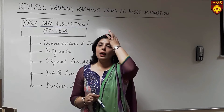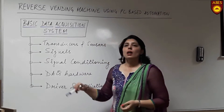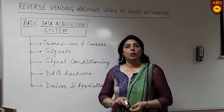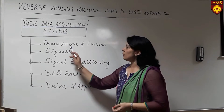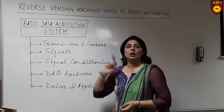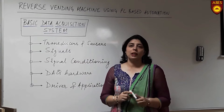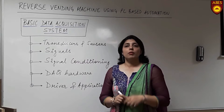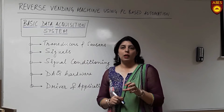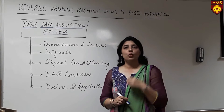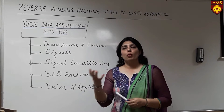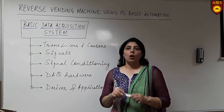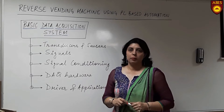Typically a data acquisition system consists of five components. The first is transducers and sensors, which are generally required to capture physical phenomena — such as the temperature of a room, the force applied on an object, or the pressure in a chamber.